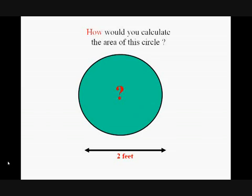How would you calculate the area of this circle? Probably using the formula A equals pi R squared. Since the diameter is 2 feet, R the radius is 1 foot.